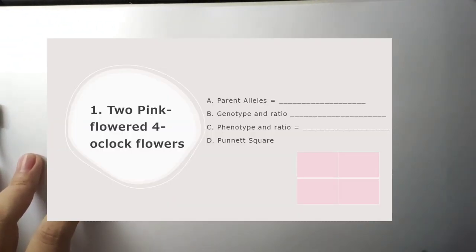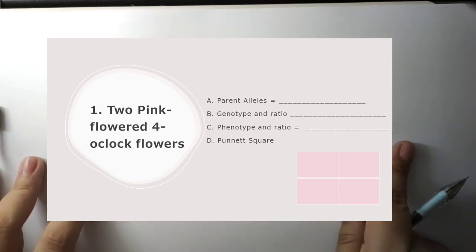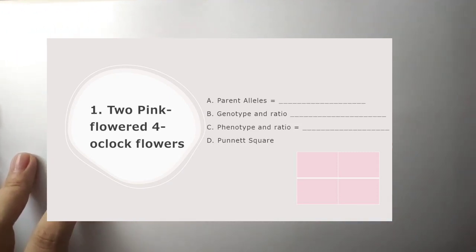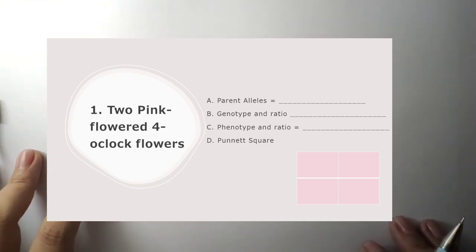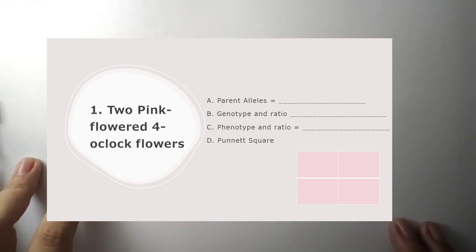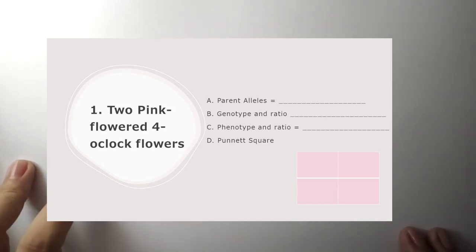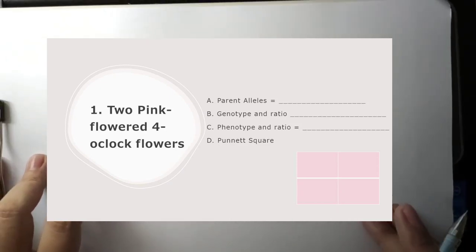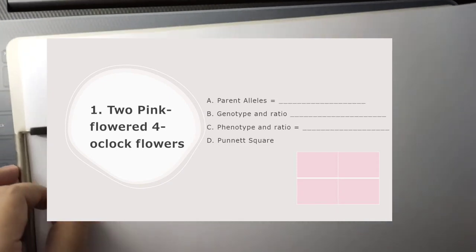Since the given includes the phenotype and genotype of incomplete dominance, I will show it on the screen. The first given is 2 pink-flowered four o'clock flowers. You need to identify: letter A — parent alleles; letter B — genotype and ratio; letter C — phenotype and ratio; and the Punnett square. Let's have the solution.